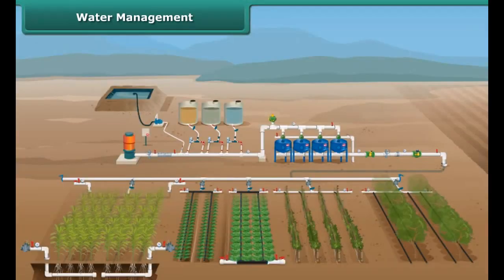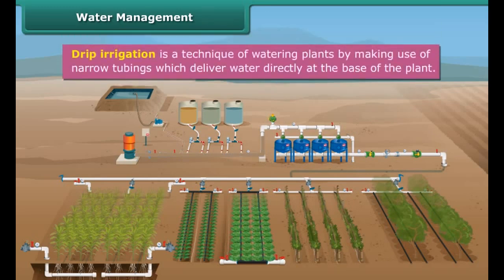A farmer can use the drip irrigation system to water his fields and conserve water. Drip irrigation is a technique of watering plants by making use of narrow tubings which deliver water directly at the base of the plant.